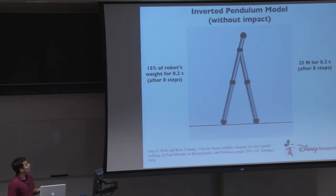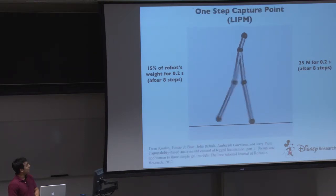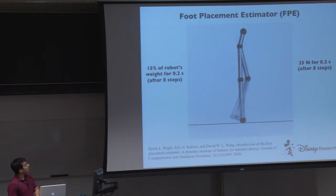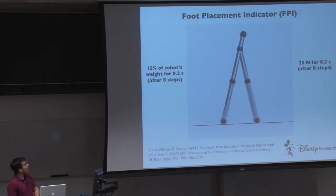This is inverted pendulum model without any impact modeling. So he does a little bit better there. He kind of holds himself up for a second and thinks about it. This is a one-step capture point with a linear inverted pendulum model. So a little bit similar. This next one is a foot placement estimator, which actually takes into account the impact, still using an inverted pendulum model. So it does actually a little bit better and smoother. And the final one, the foot placement indicator, actually takes into account the full dynamics of the robot when it gets pushed.